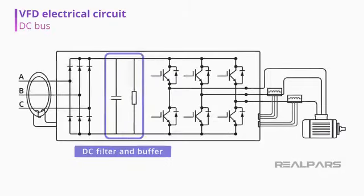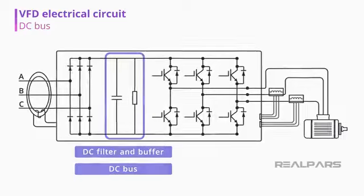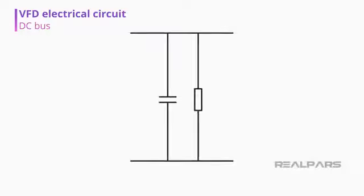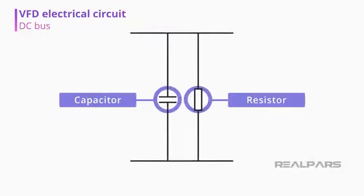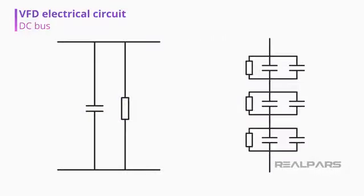Next, we have the DC filter and buffer, also known as the DC bus. The DC bus is represented by only one capacitor and resistor on the diagram, but in reality there are various capacitors and resistors associated in series and in parallel.